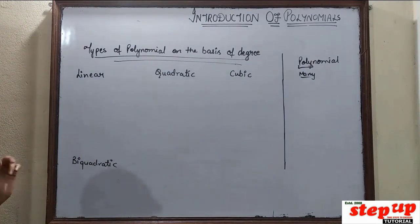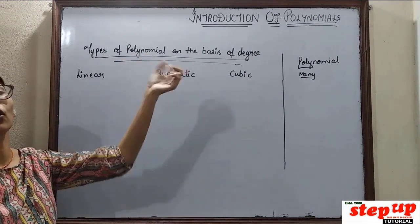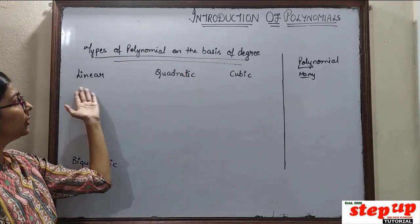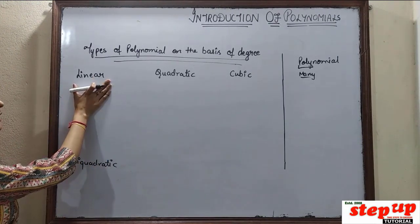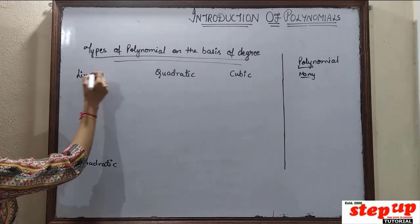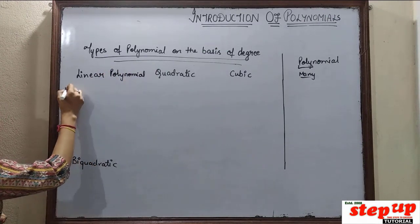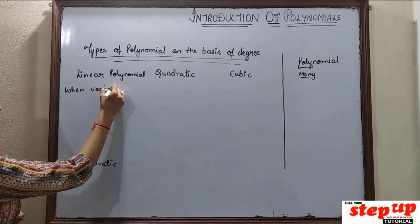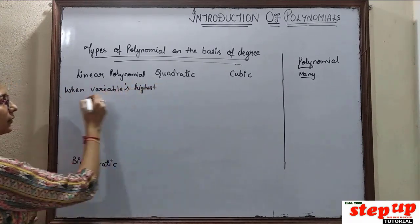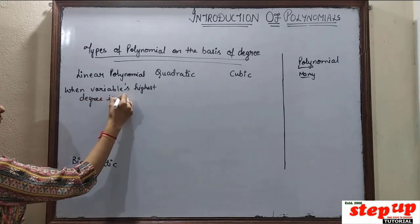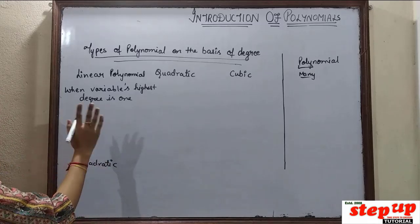Now, types of polynomial on the basis of degree — this is the most important concept. First you will get linear polynomial. When the variable's highest degree is one, then you will call it a linear polynomial. For example, 3x plus 5 — you only need to look at the variable. If there is nothing written on it, it means the degree is 1. So this thing we will call linear polynomial.